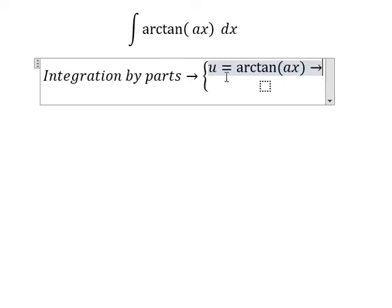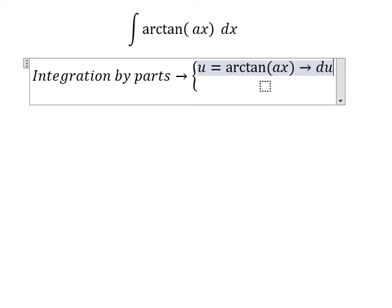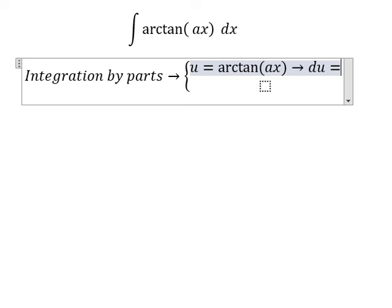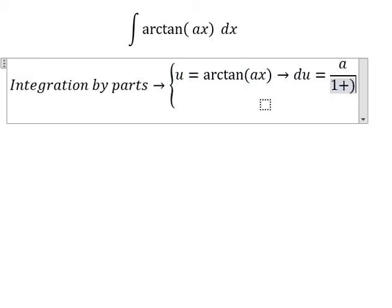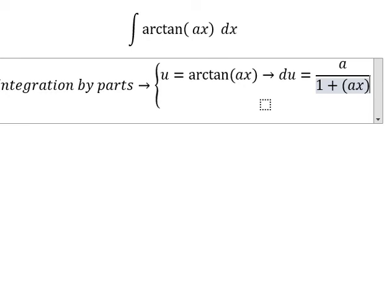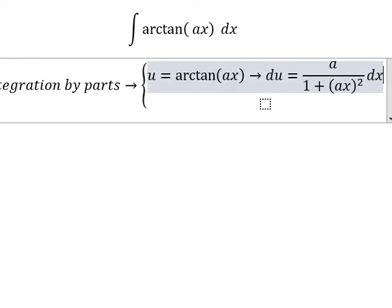So if we do first derivative for both sides, you got du equals a over 1 plus ax squared dx.